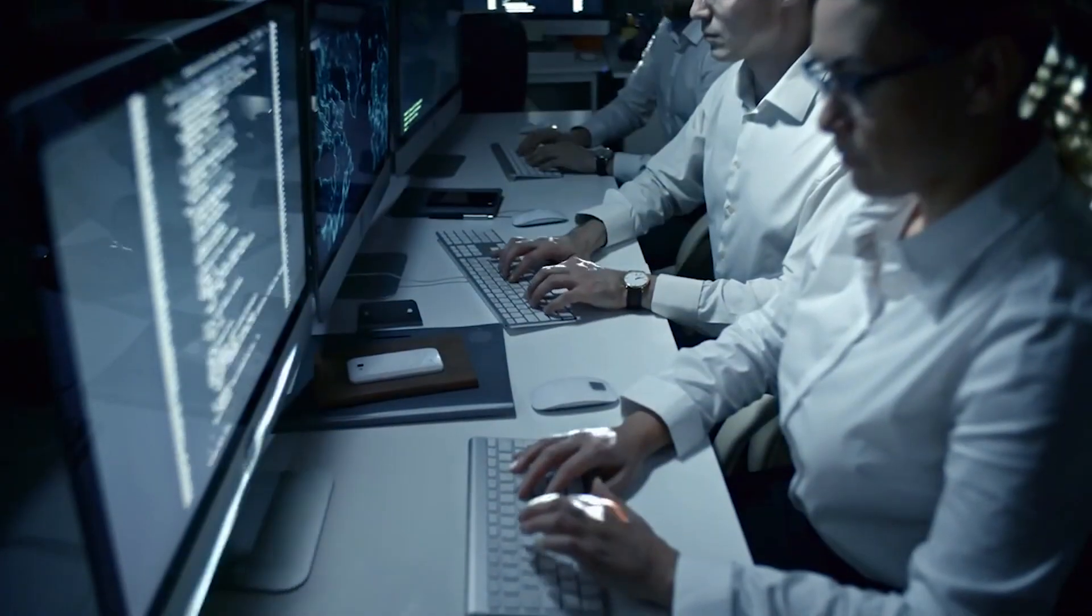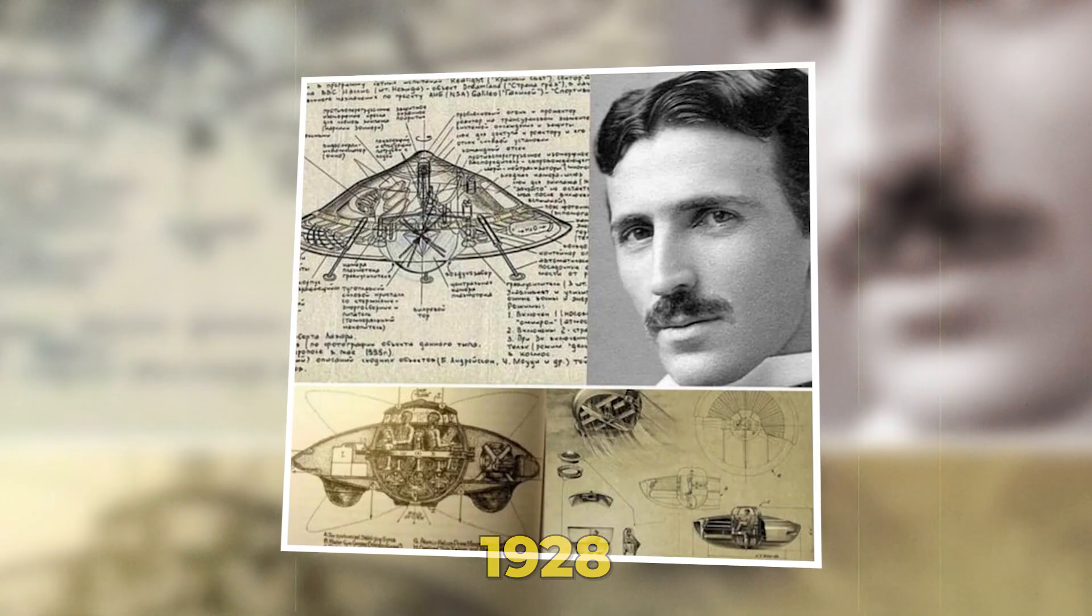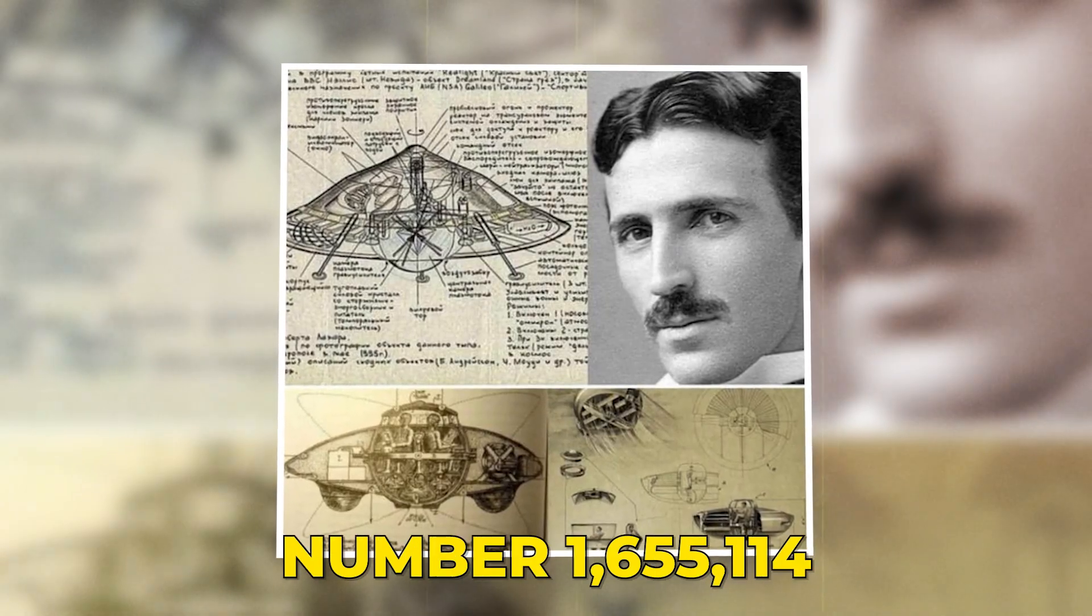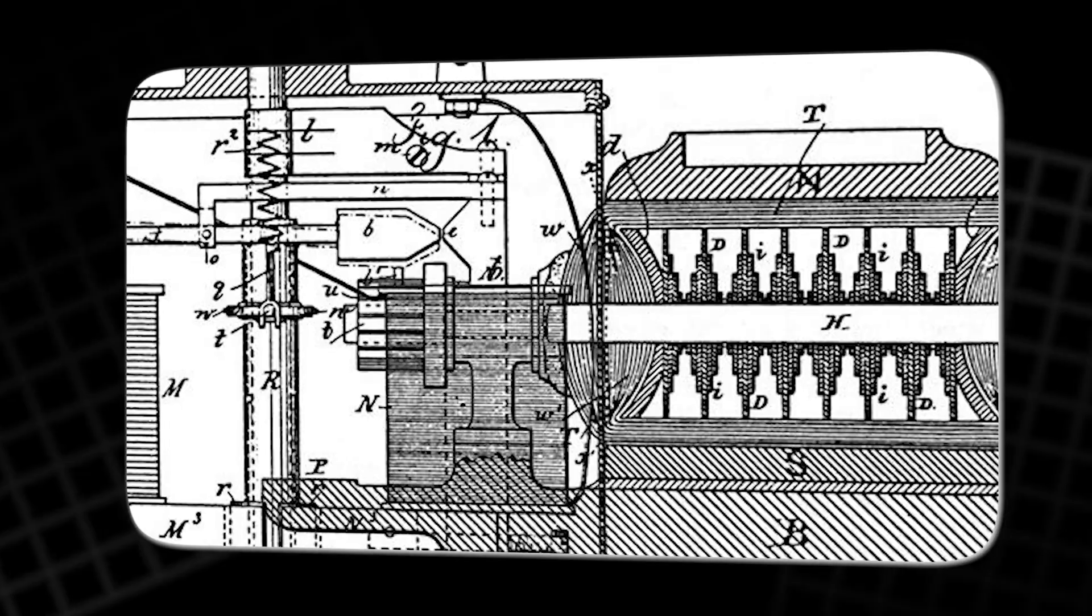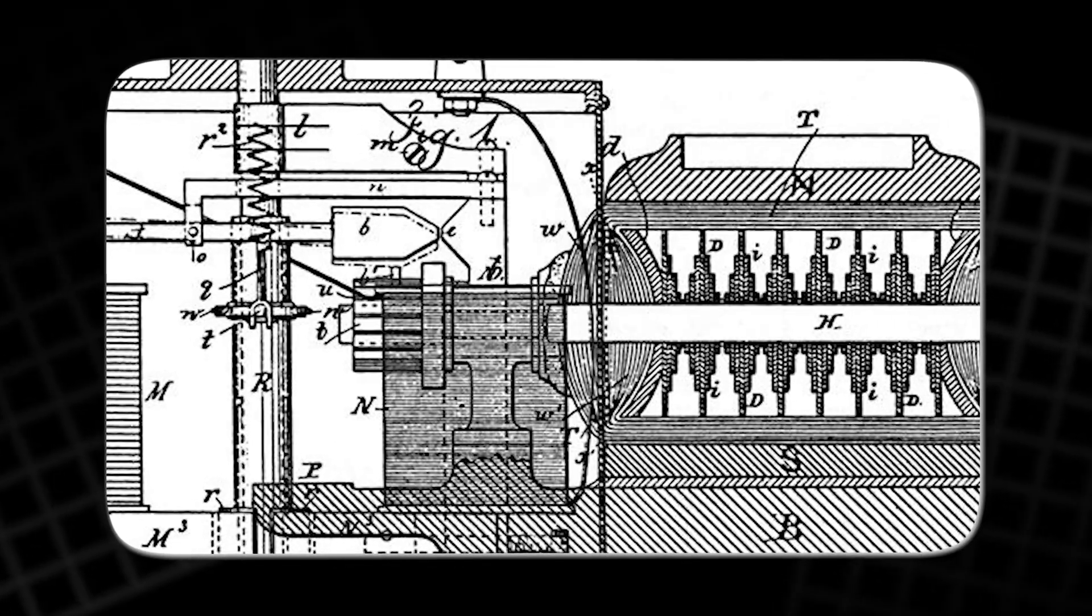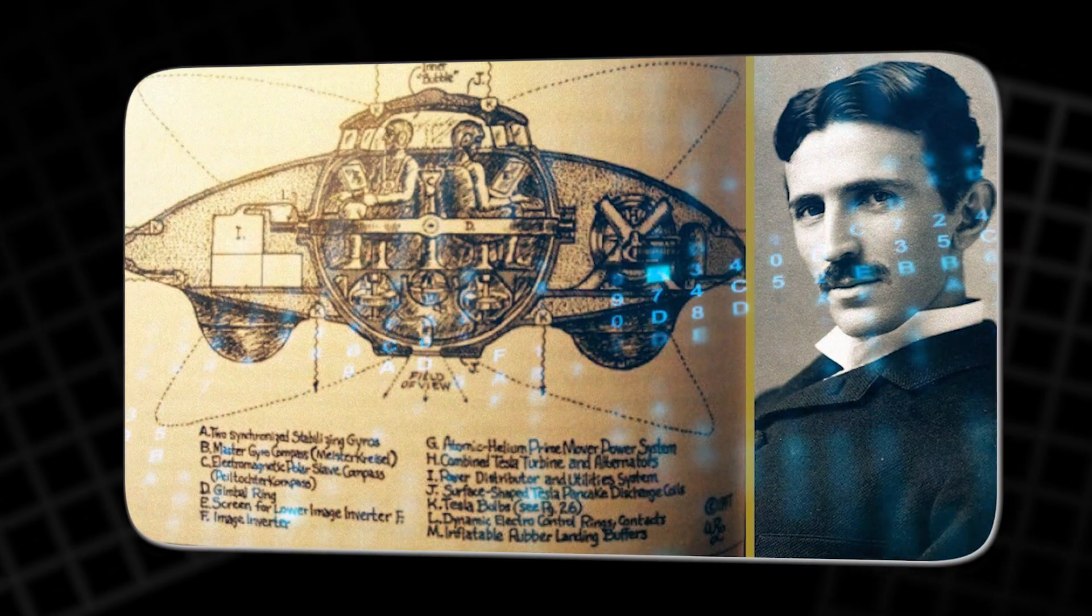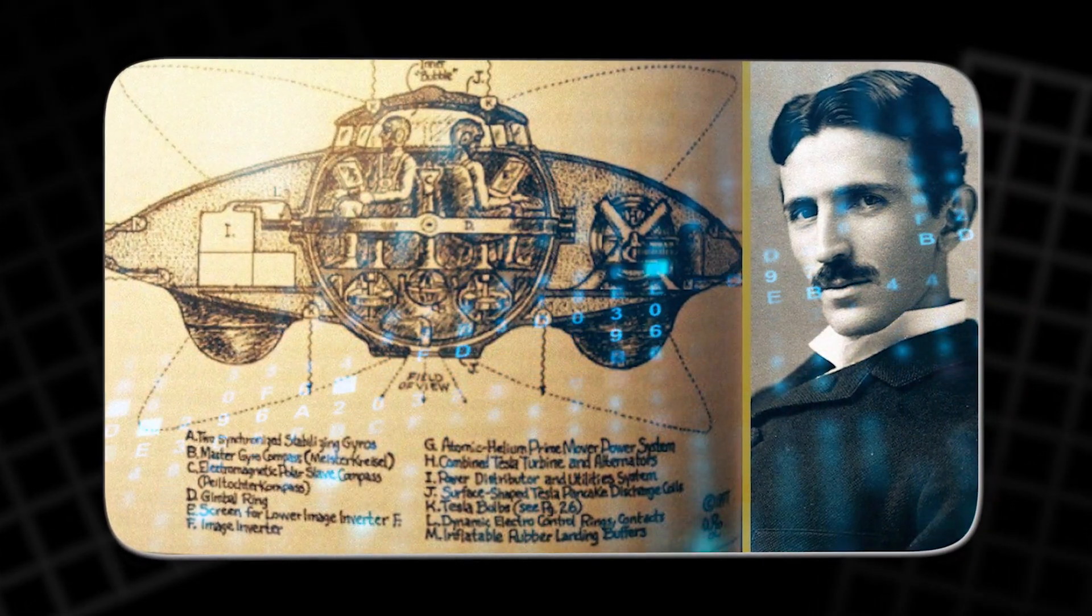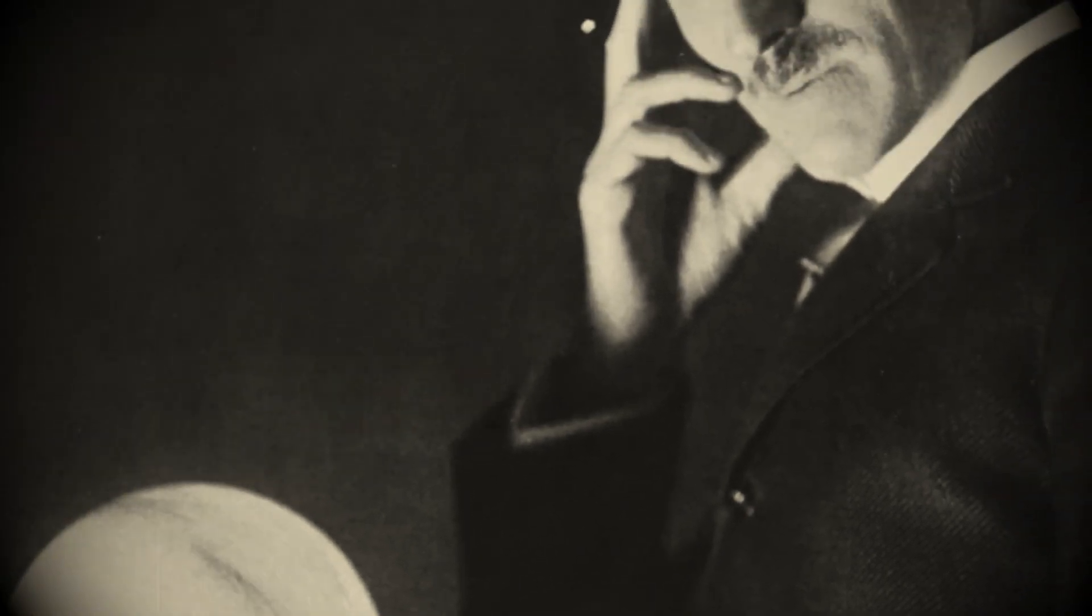Somewhere inside that ocean of data, one document kept flashing. A 1928 patent, No. 1,655,114. On paper, it was just an apparatus for the utilisation of radiant energy. In practice, the AI concluded it was the missing key to his final obsession, and maybe the reason his work was seized the moment he died.